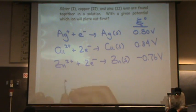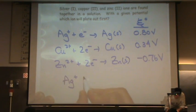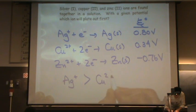Silver. Silver, yeah. So if you had these all in solution, you'd expect silver first. Next would go copper, it has the next largest number, and lastly would go zinc.